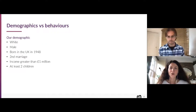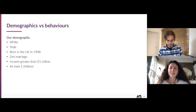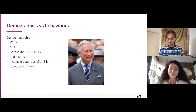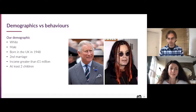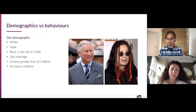To illustrate the difference between demographics and behaviors: consider someone who is white, male, born in the UK in 1948, had two marriages, has great income over one million, and has at least two children. That could be King Charles or it could be Ozzy Osbourne. Would these people share the same behaviors, intentions, motivations, goals? Absolutely not. They share demographics but not behaviors — and personas are about capturing shared behaviors, not demographics.